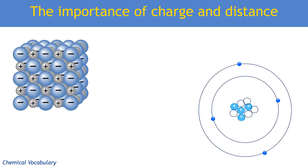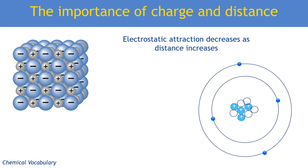There are factors that affect the strength of an electrostatic force of attraction. One of them is distance. Just like any other non-contact attractive force such as gravity, you get a decrease in the strength of the attraction as the distance increases. This could be the distance between electrons and the nucleus, or the distance between two ions, which depends on the size of the ions.